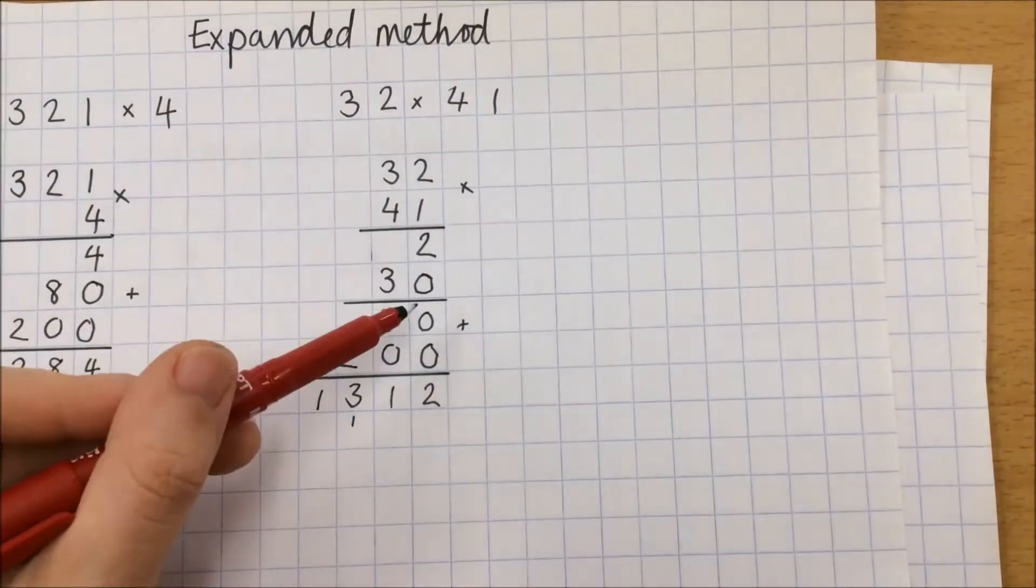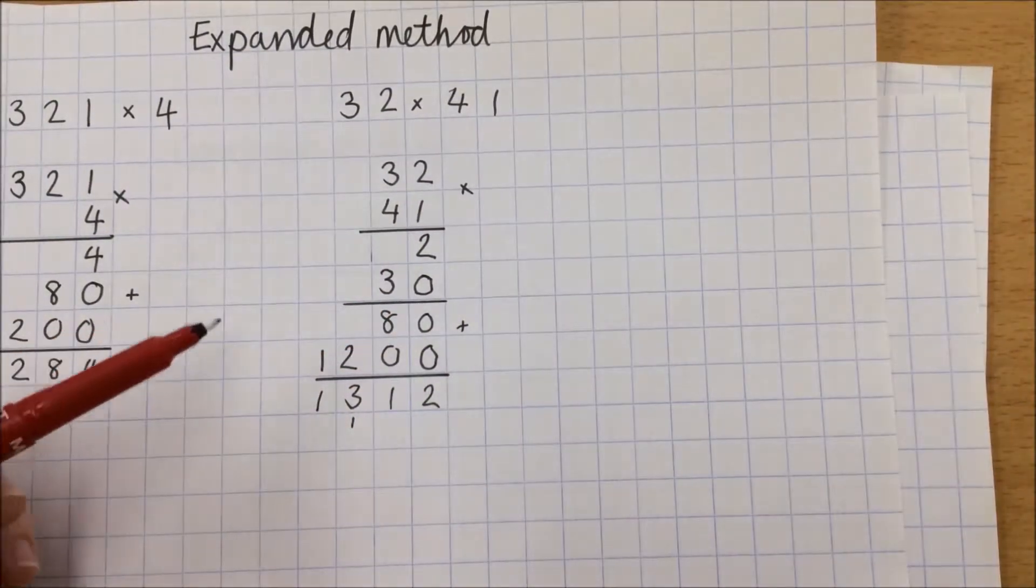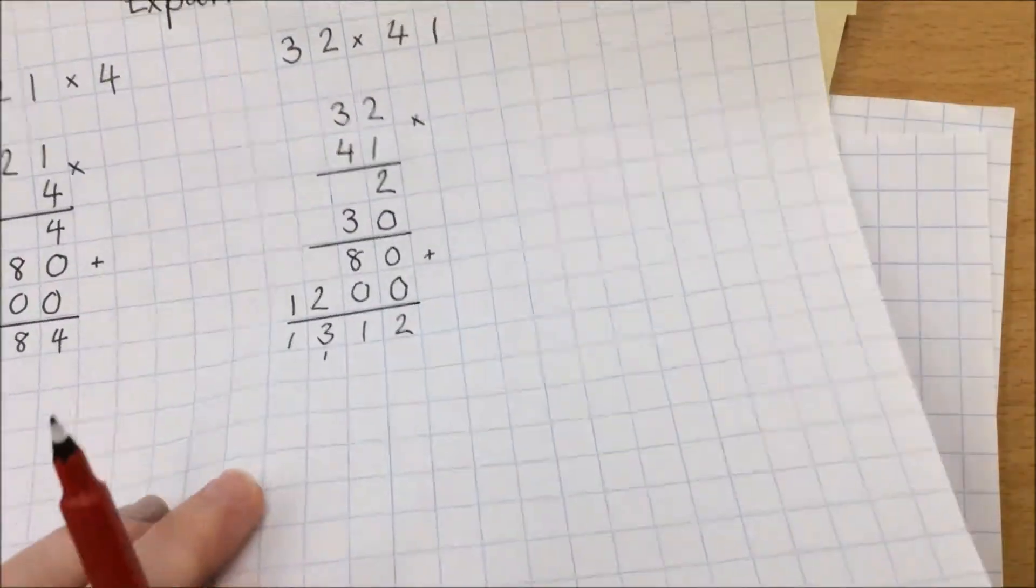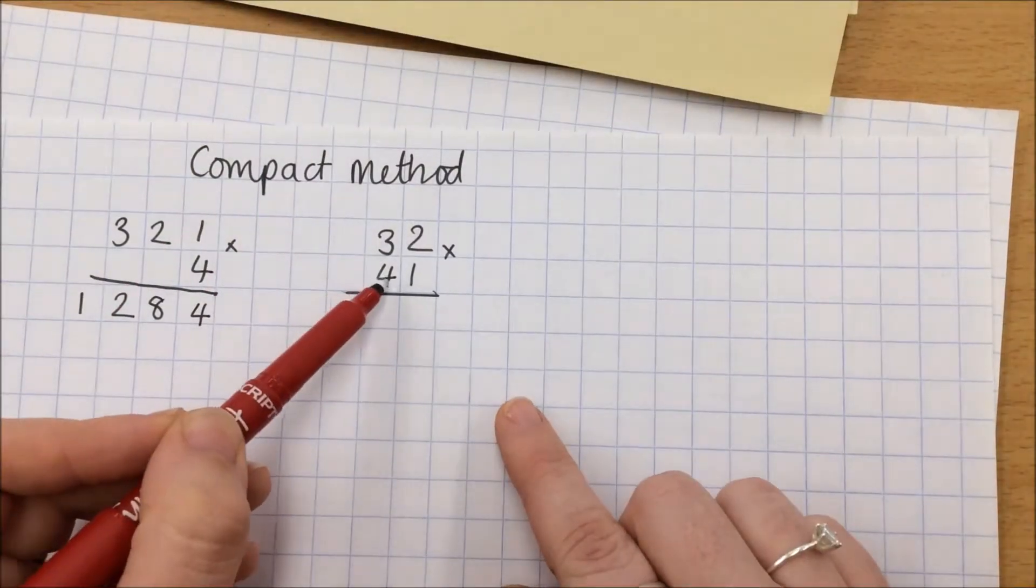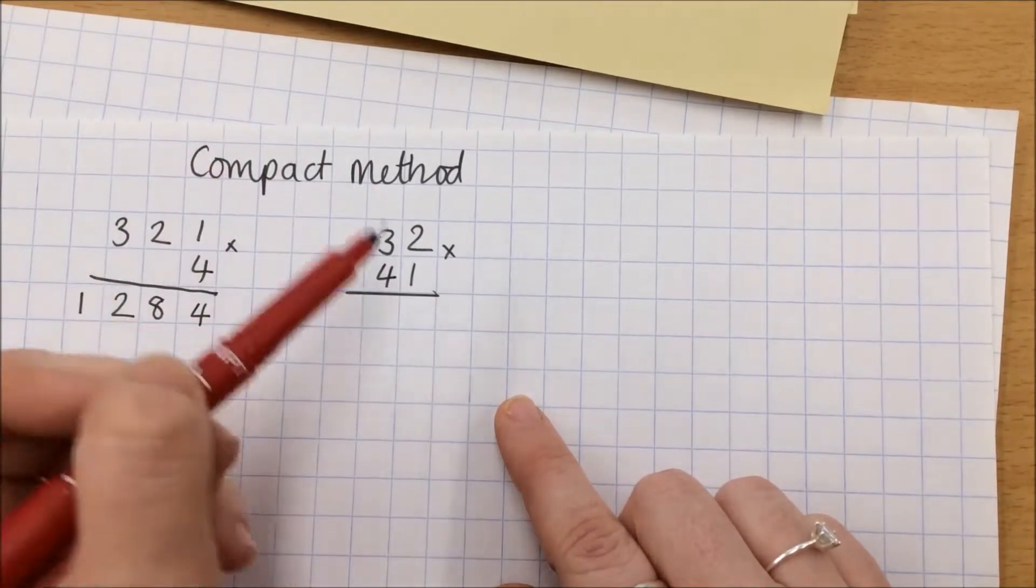So as you can see with the expanded method we went underneath for each section. We're not going to do that for this one. We will however have, you will notice, two parts to it because we've got tens and units, tens and ones sorry.